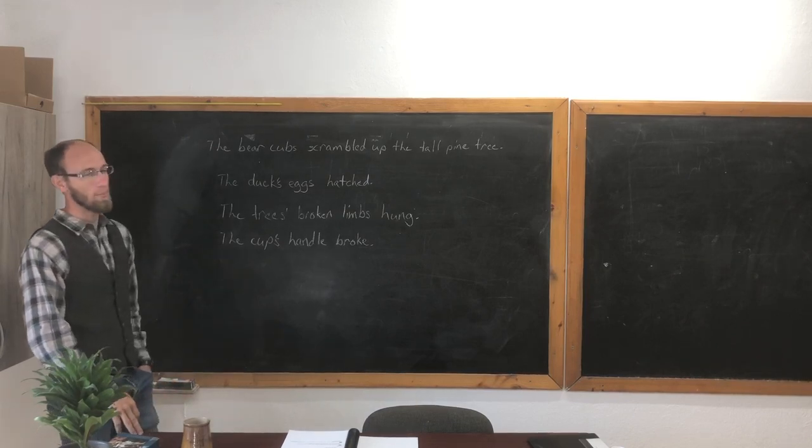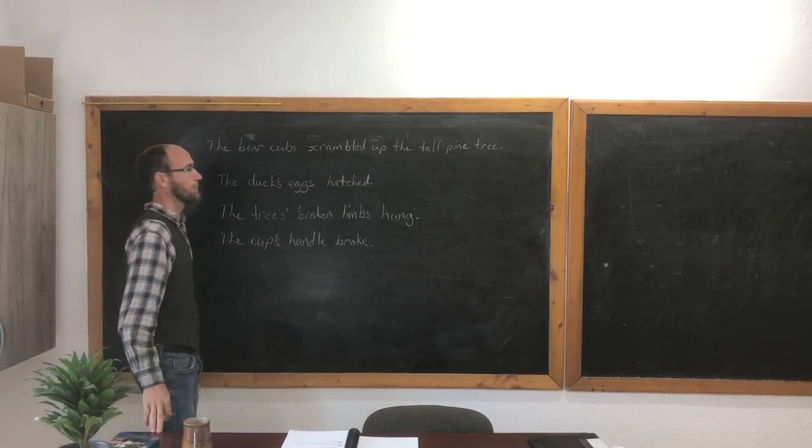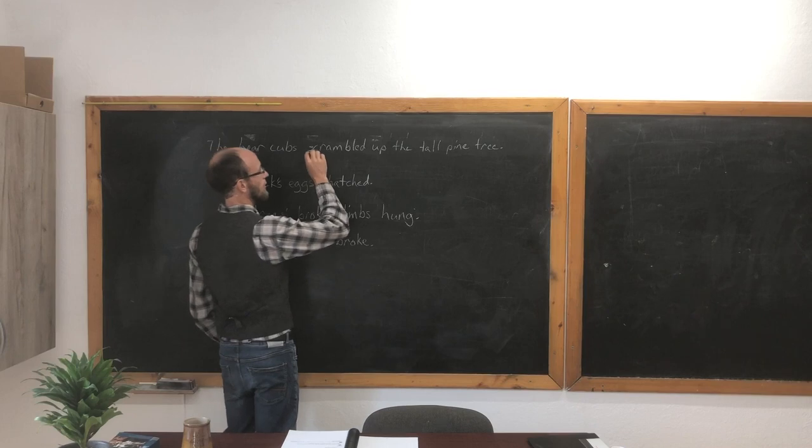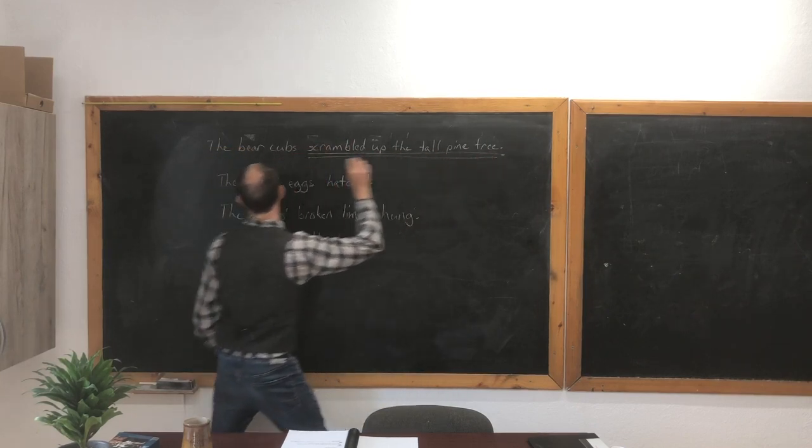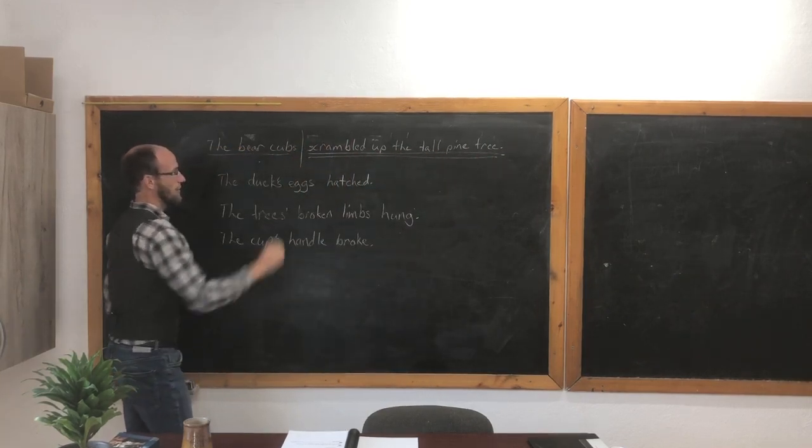What is the verb? The bear cubs scrambled up the tall pine tree. Scrambled up the tall pine tree. Good. That's the complete verb. And the complete subject is the bear cubs. We'll divide it right there.